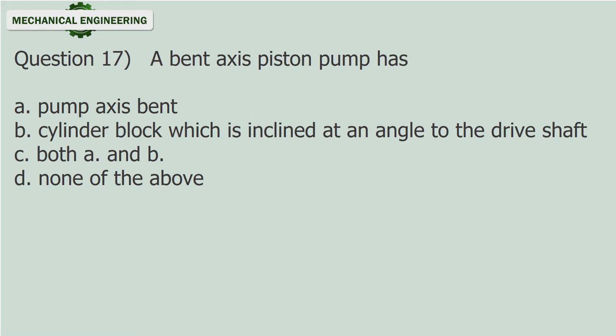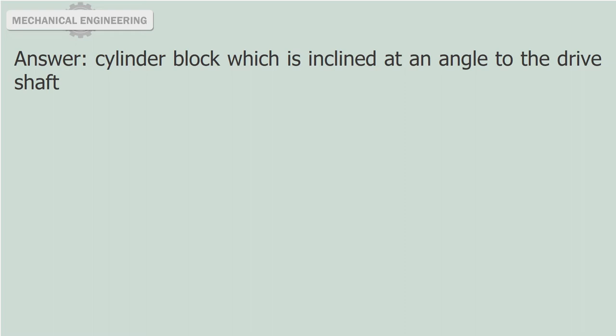Question 17: A bent axis piston pump has — A) pump axis bent, B) cylinder block which is inclined at an angle to the drive shaft, C) both A and B, D) none of the above. Answer: Cylinder block which is inclined at an angle to the drive shaft.